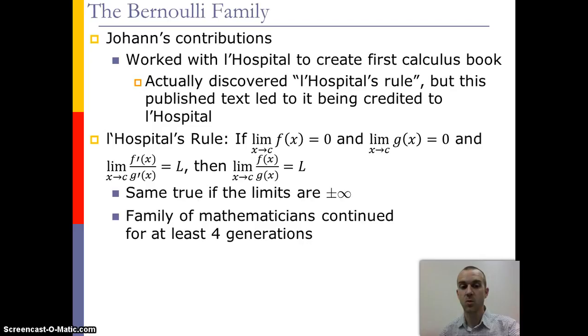Now the family itself continued for four generations of mathematicians, so their works continue to have significant impact with our modern mathematics, even beyond just Jacob and Johann.